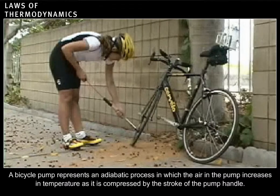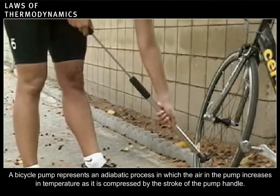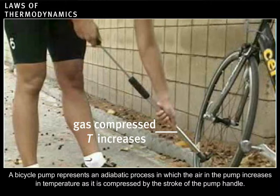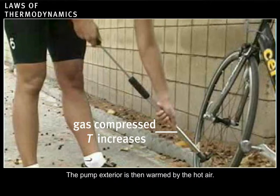A bicycle pump represents an adiabatic process in which the air in the pump increases in temperature as it is compressed by the stroke of the pump handle. The pump exterior is then warmed by the hot air.